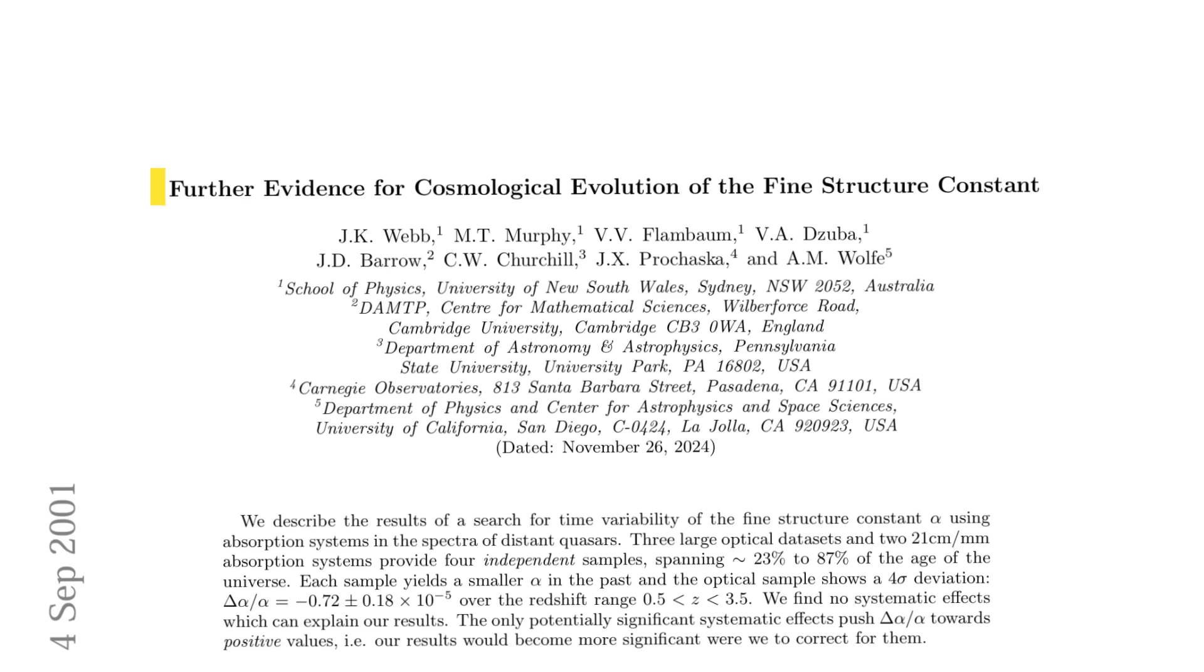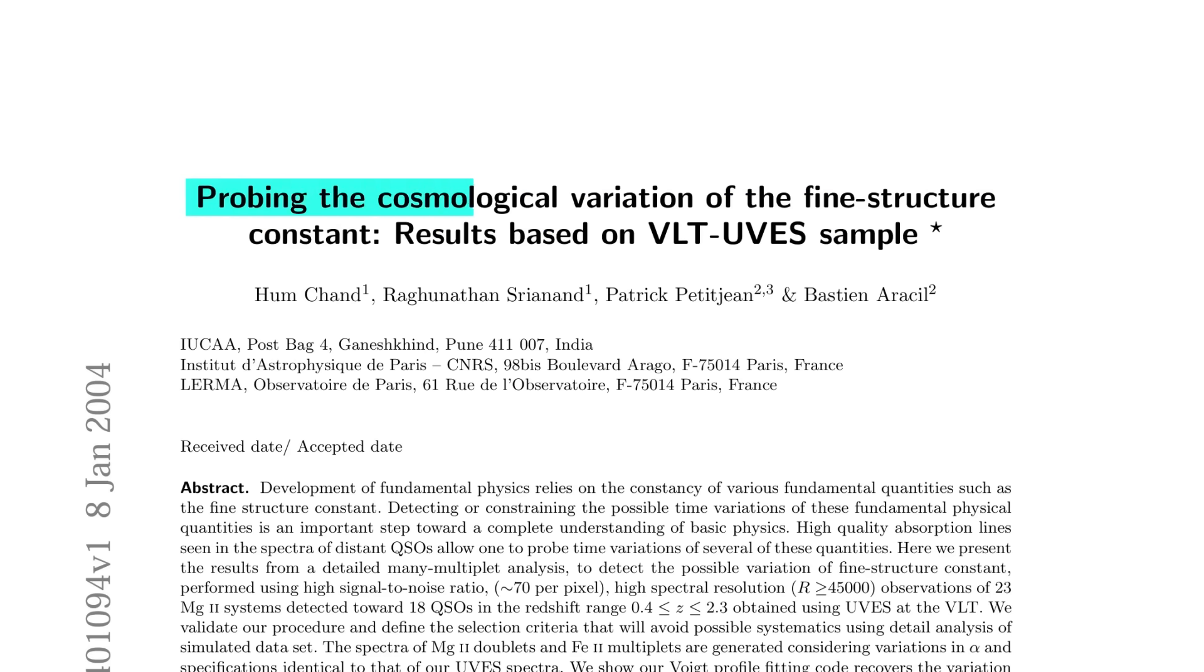So what did scientists find? Well, different research groups came to different conclusions. A famous experiment by the John Webb team did observe small variations in alpha. But other research teams who performed similar experiments observed no variation at all. So the evidence is inconclusive. We need more precise measuring devices and perhaps even an entirely new method.